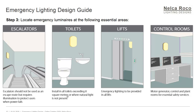For toilets: install emergency lighting in all toilets exceeding eight square meters, or where natural light is not present. For every toilet or cubicle not exceeding eight square meters, you should provide a dedicated emergency luminaire. For lifts: emergency lighting must be provided in all lifts — sometimes it is included by the lift manufacturer or supplier, but if not, you need to add a dedicated emergency luminaire. Control rooms, motor generator rooms, and plant rooms for essential safety services should also have a dedicated emergency luminaire.